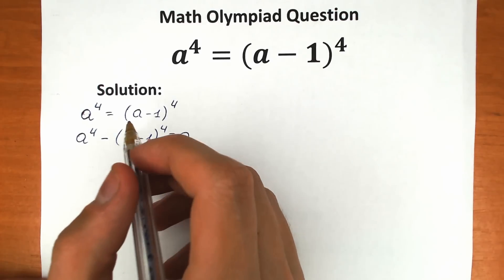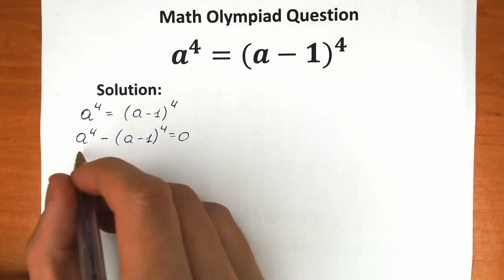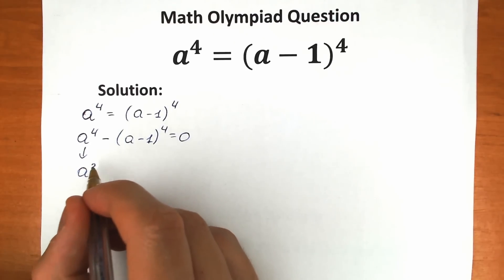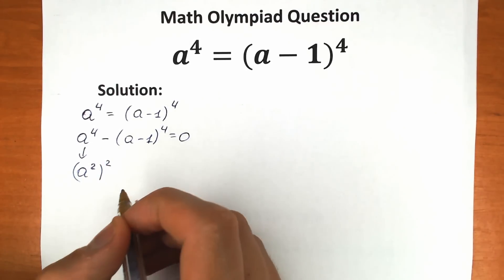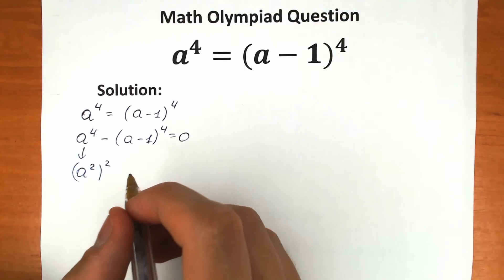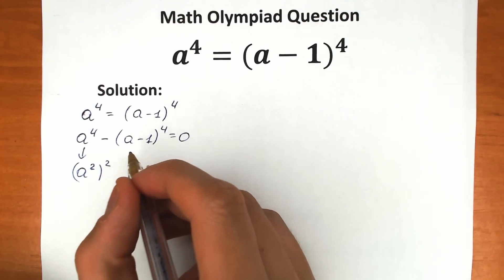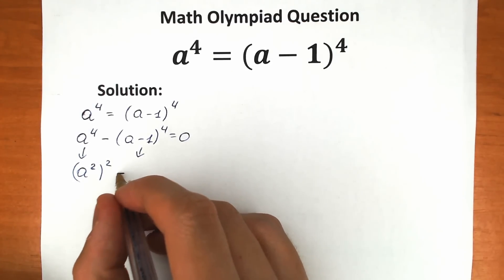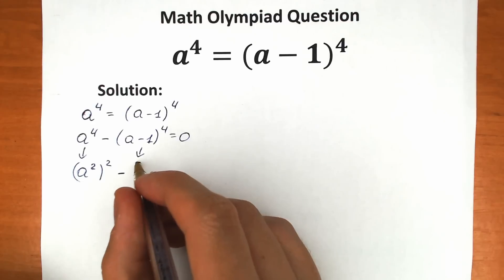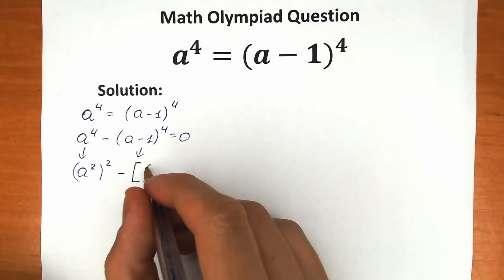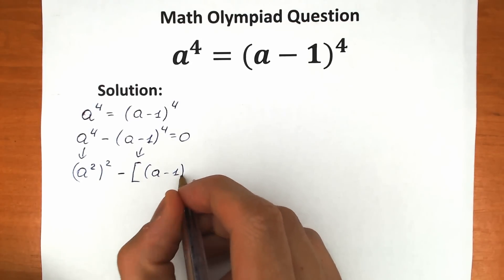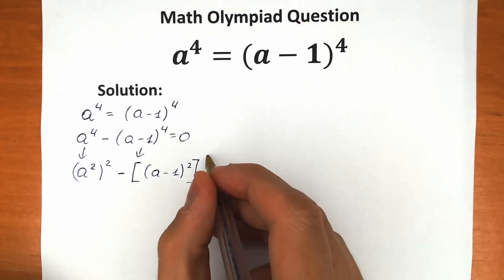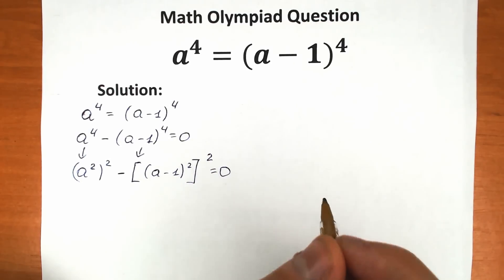Now, what are we going to do next? Let's write a to the fourth power as (a squared) squared. And with the same logic, (a minus one) to the fourth power becomes minus [(a minus one) squared] squared, and the whole expression equals zero.